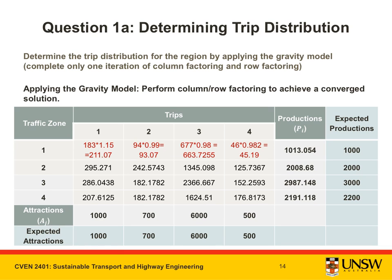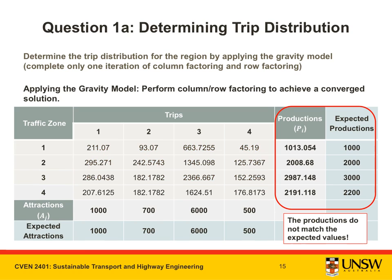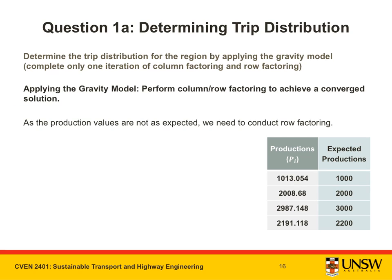This slide shows the trip matrix after the first iteration of column factoring. Now the attractions match up, but in doing this we have destroyed the conservation of productions. To resolve this, we need to perform row factoring, which scales the rows of the trip matrix from the previous slide. Let's step through the calculations for zone 1.